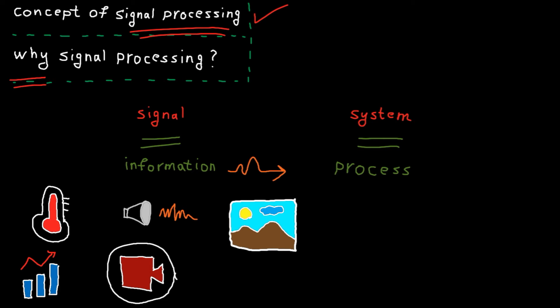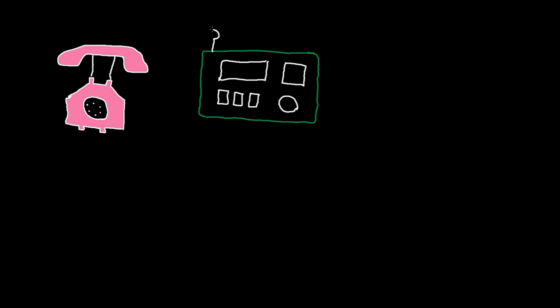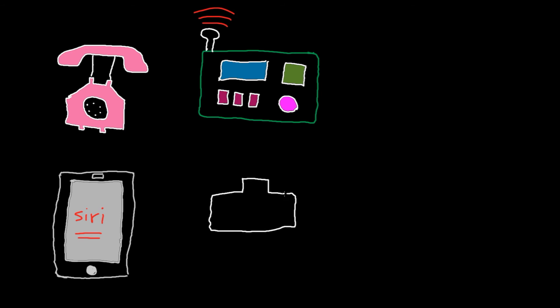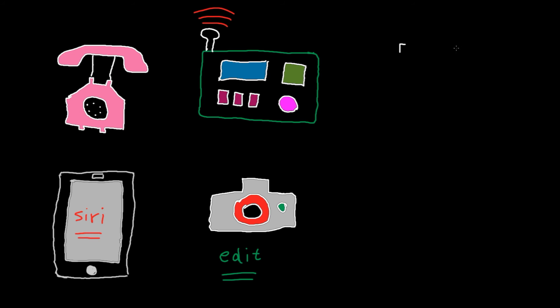Now the question is why do we need signal processing? To answer that, let me show you some of the applications. When we are talking on the phone, lots of signal processing is involved. When you are trying to tune your radio to a specific channel you are using signal processing. When you talk to your iPhone and ask Siri to do something for you, the voice recognition process has some signal processing. When you take a photo and edit that photo with Photoshop or other software you are using signal processing. When you use your fingerprint to log into your laptop, signal processing is involved.